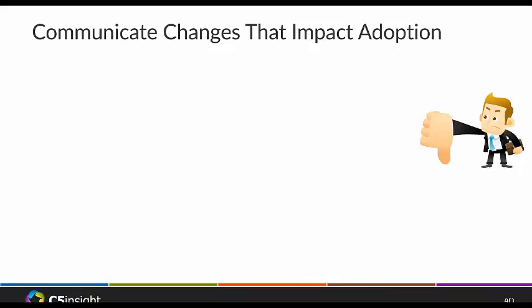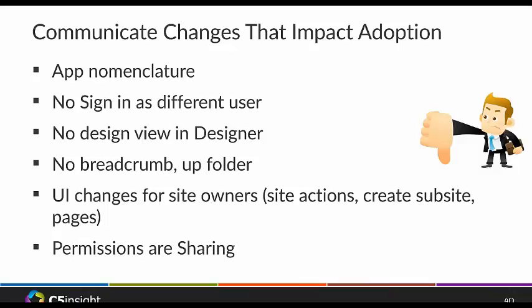When talking to the business about requirements, don't forget changes that are going to impact user adoption. The new app nomenclature — people won't know what an app versus a web part is. SharePoint 2013 removed 'Sign in as different user' by default, though you can add it back. Design view is gone in Designer. There's no breadcrumb or up-folder anymore. Site actions were moved around, creating sub-sites is now on different pages, and permissions is now referred to as sharing. There's a lot that can easily confuse users.